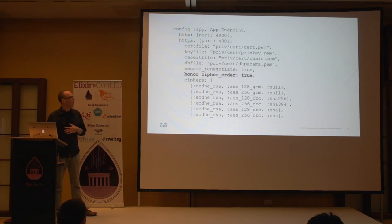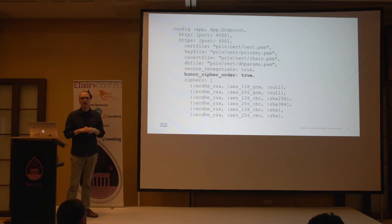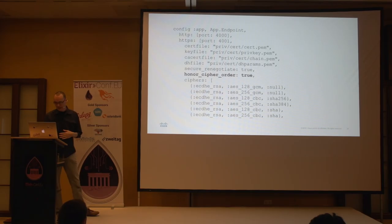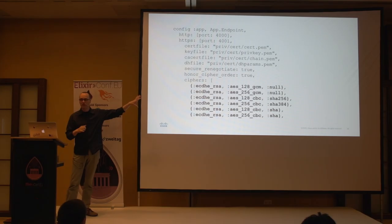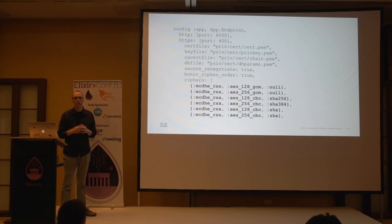The honor_cipher_order option gives you control over which cipher gets selected — it defines which ciphers you're willing to accept and the order in which the server picks between what the client supports and what you prefer. These six cipher suites should be enough to support basically all modern browsers or other clients you might want to support. In the next slide I'll show a few backup options that give slightly more client compatibility.